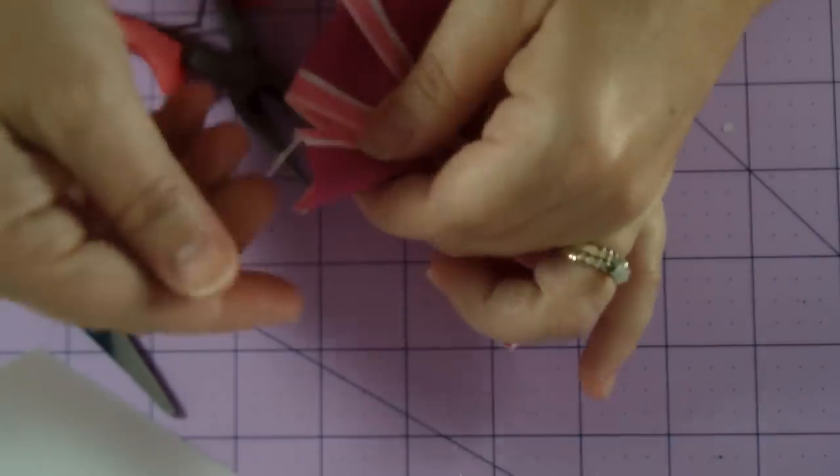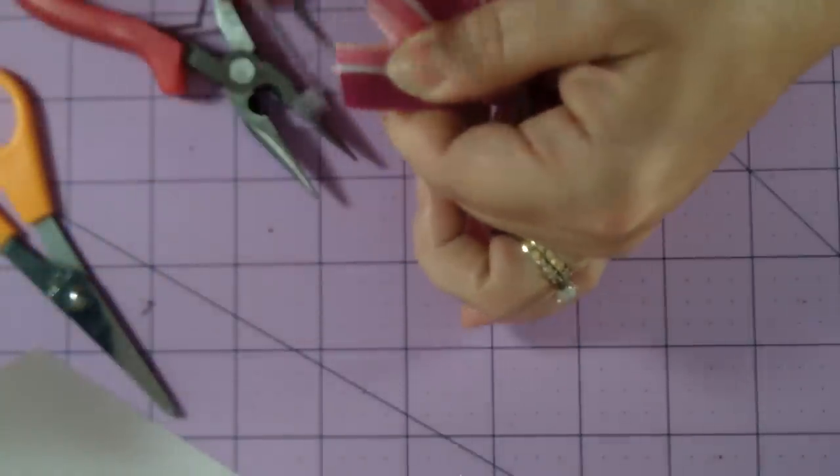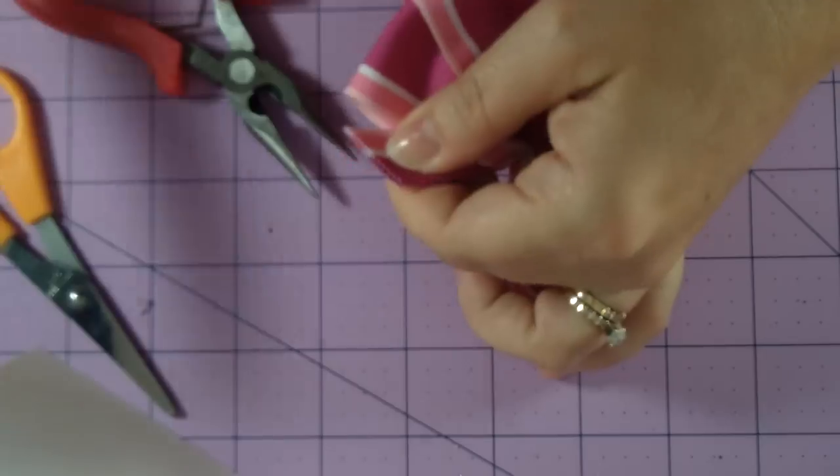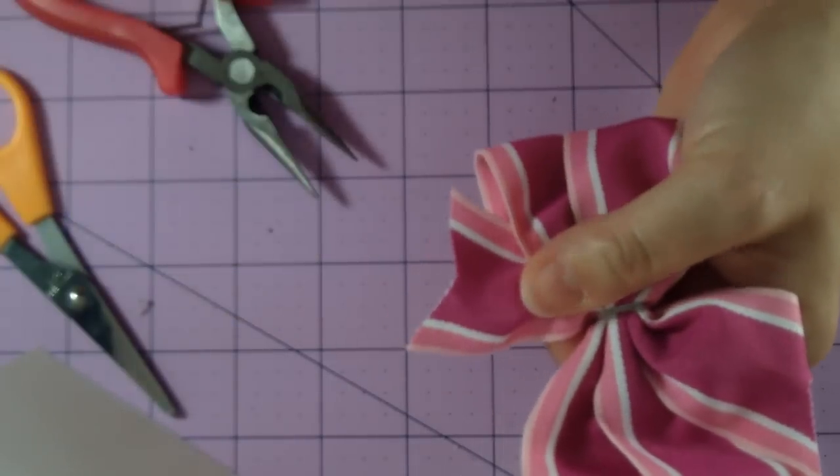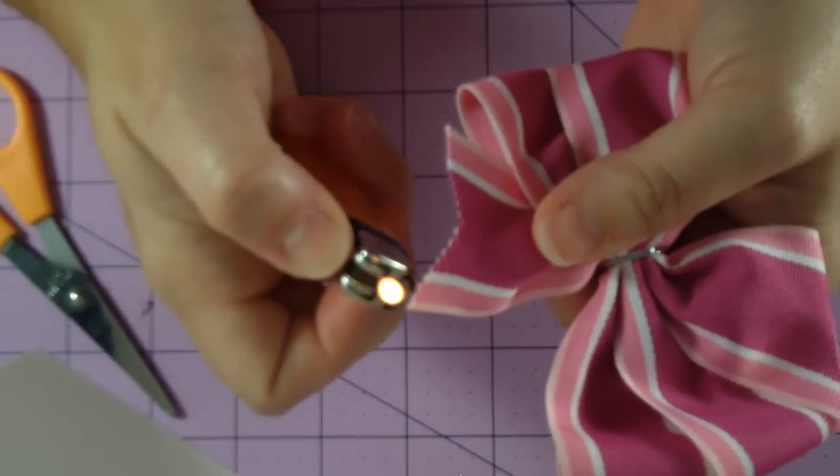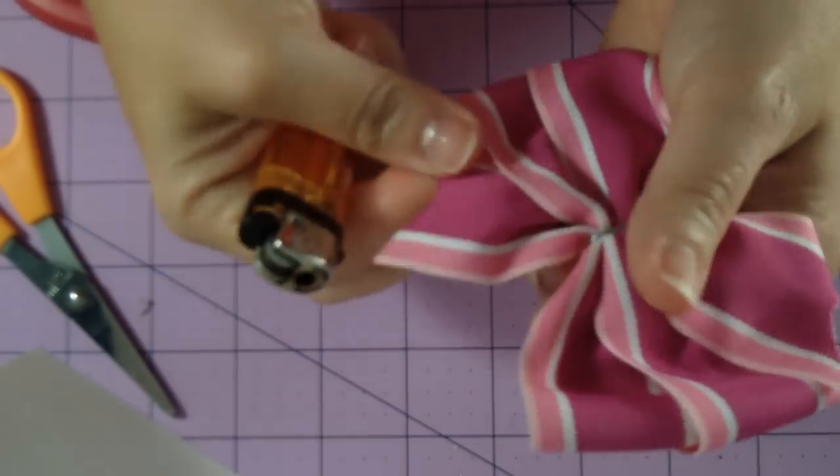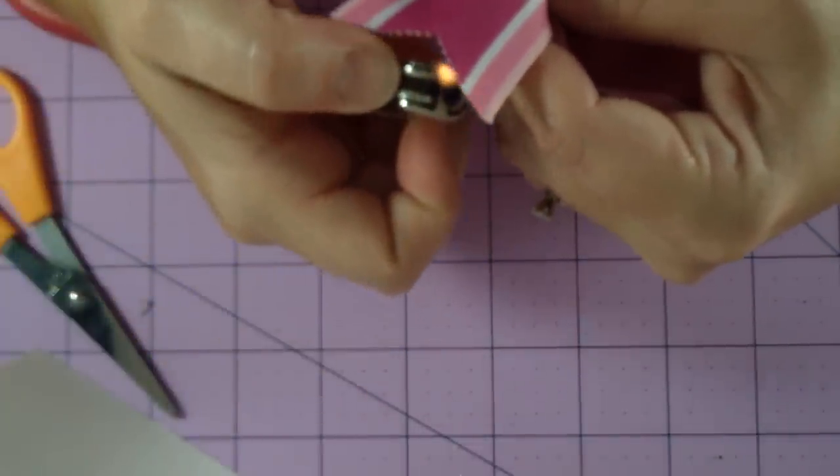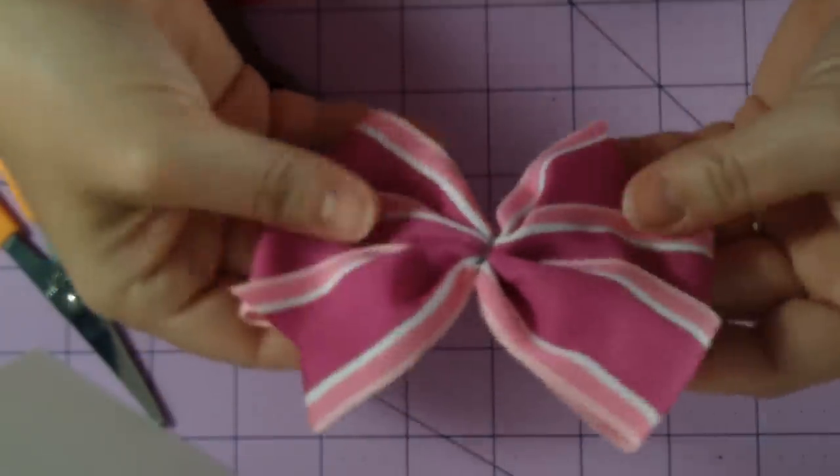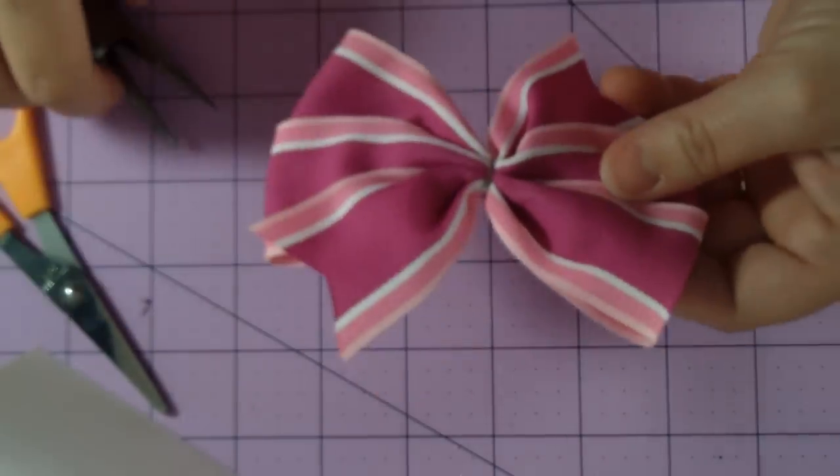Then you just want to heat seal these ends so that you don't have any fraying. A lighter is a very easy way to do that. Just run it right along the edge. You can see that's about four inches wide.